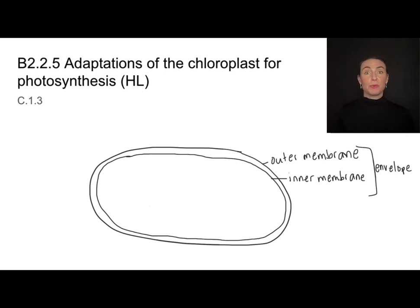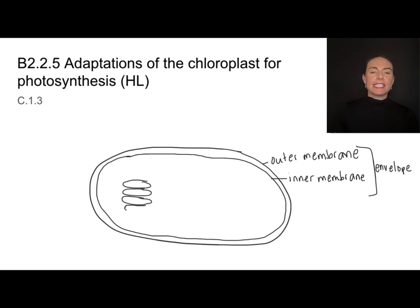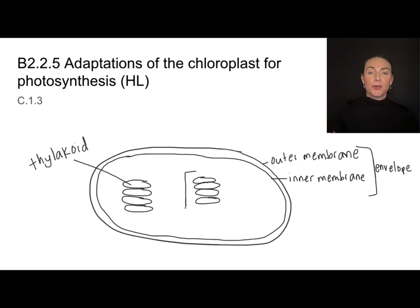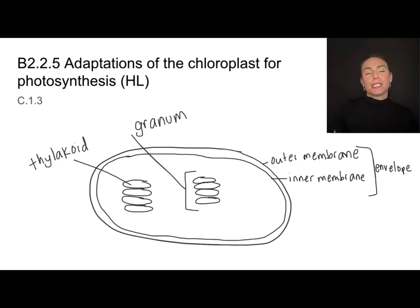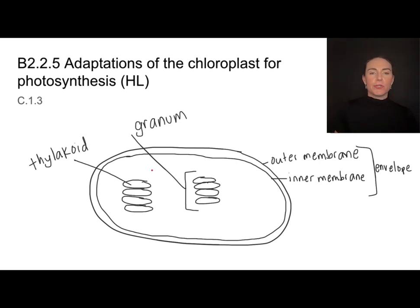A chloroplast has to be able to absorb light if it's going to do photosynthesis, and it uses a pigment called chlorophyll to absorb that light. Chlorophyll is found in the membranes of these little disc-like features called thylakoids. Inside a chloroplast, you're going to see multiple stacks of thylakoids — we refer to an entire stack as a granum, and multiple stacks as grana. Then we have a fluid-filled space that surrounds all of these grana, and that fluid is called the stroma.